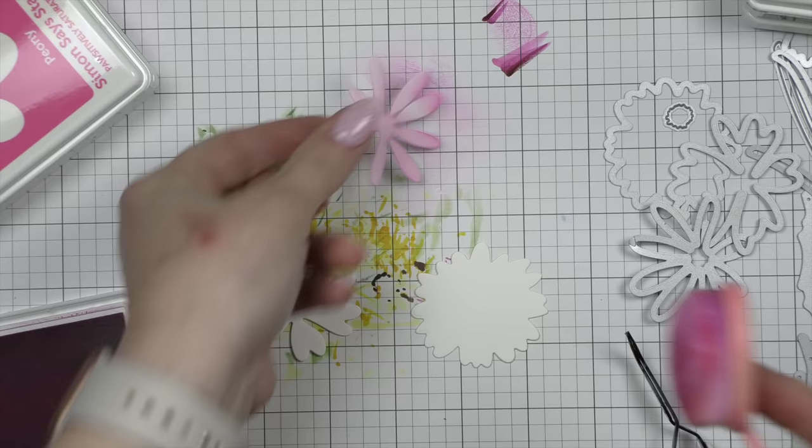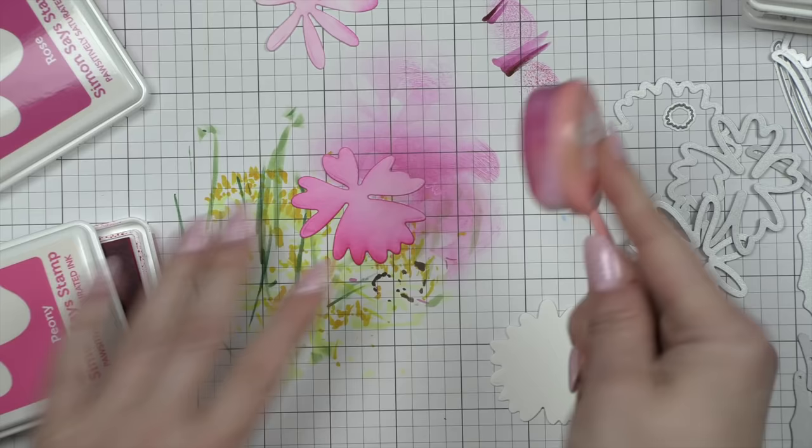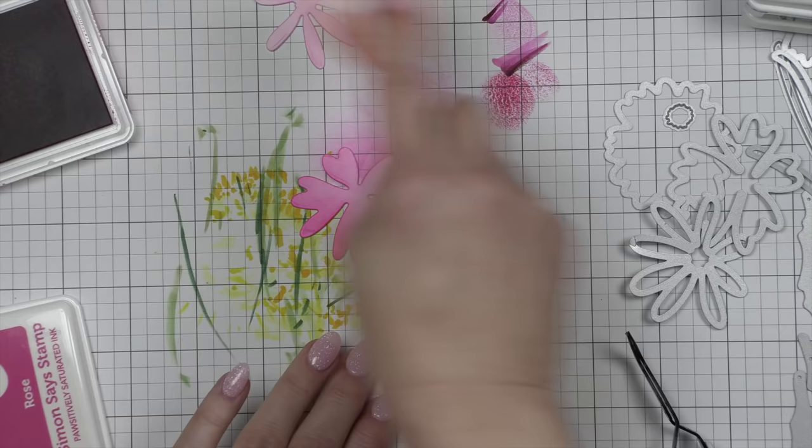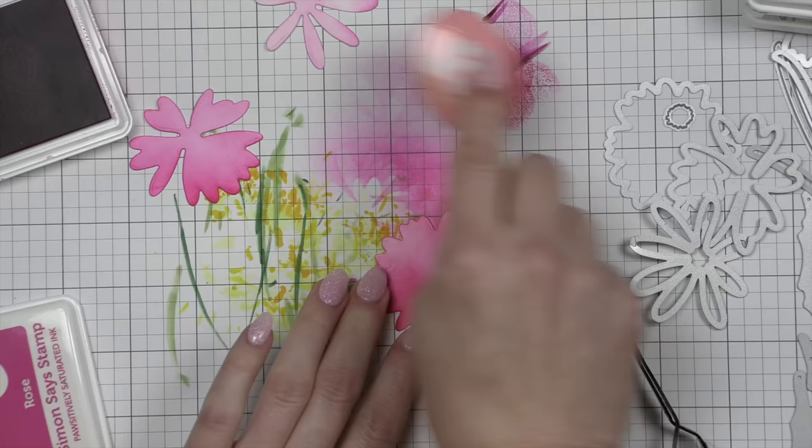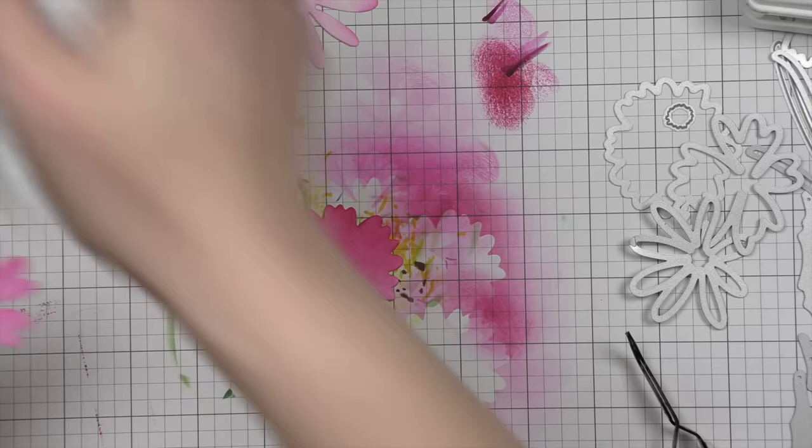We're going to do this for all of the pieces. One of the things I love about Altenew in their packaging is they show you how to assemble each of these. So you're not left wondering which layer is which. It shows you exactly how to assemble them, whether you've die-cut them from different colors of cardstock, whether you've die-cut them from white and you're coloring them with markers or inks like I'm doing here. It makes it super easy to assemble.